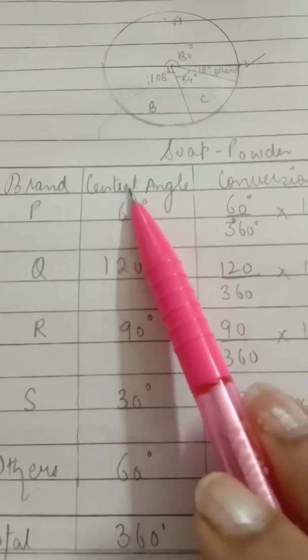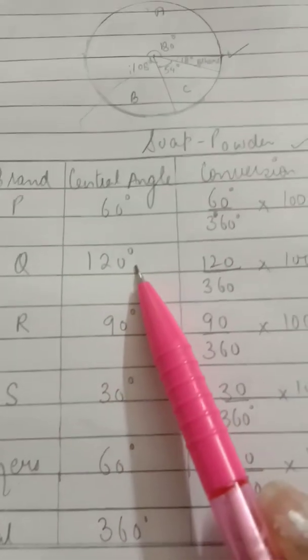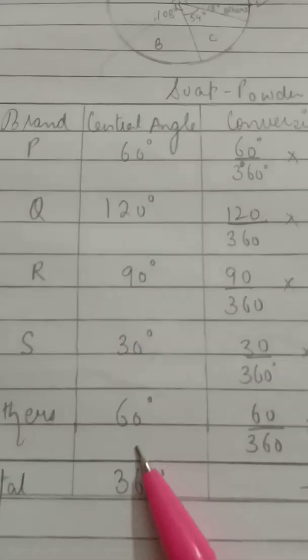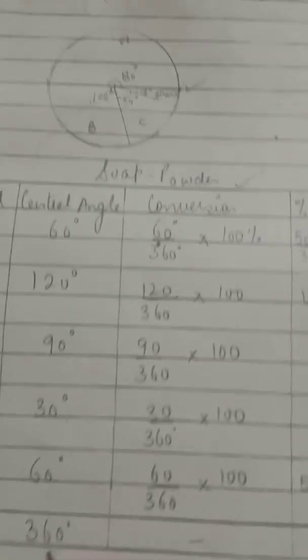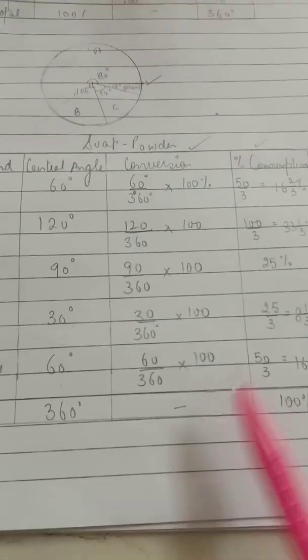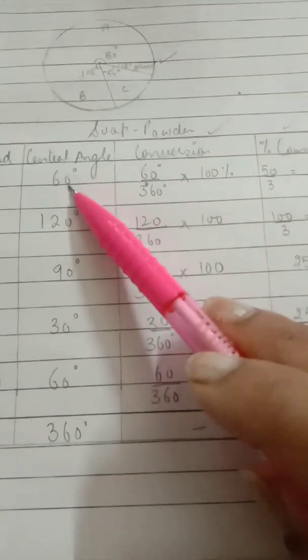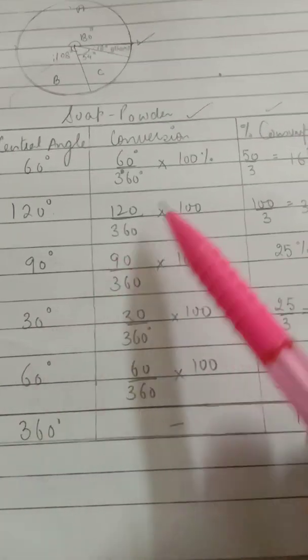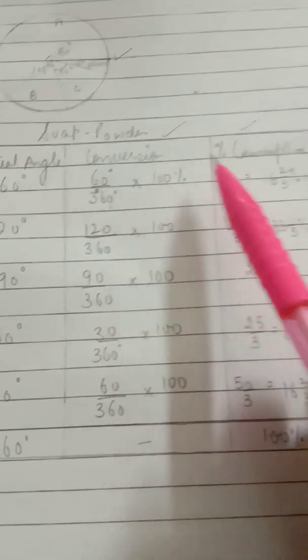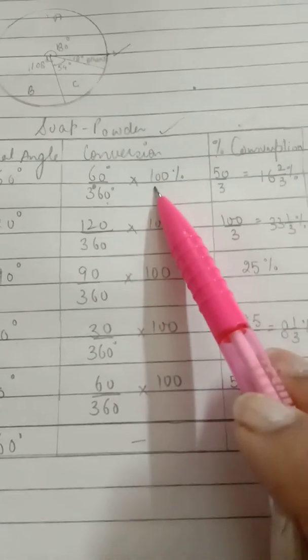Brand P, Q, R, S, and others. Here they have given angles, so we may write down central angle: 60 degrees, 120 degrees, 90 degrees, 30 degrees, and 60 degrees. Total is 360 degrees. Now for this particular question, the conversion must be in percentage form.